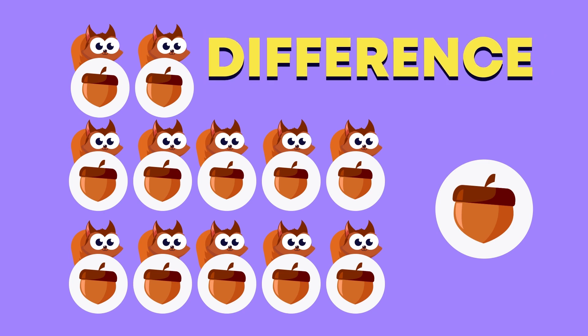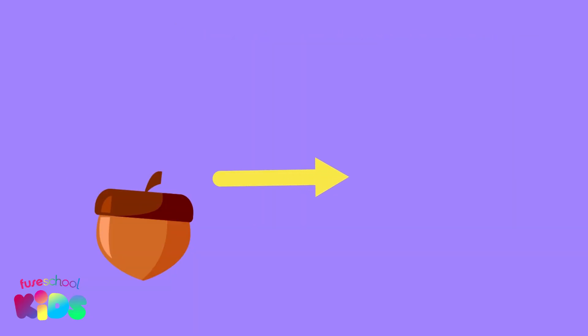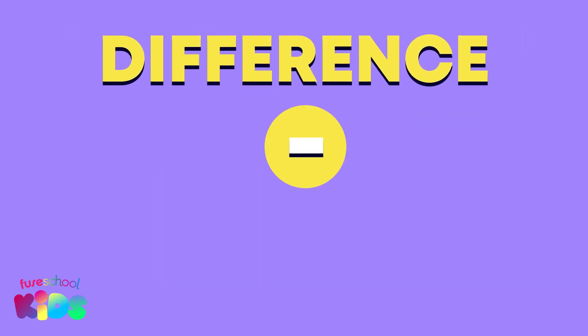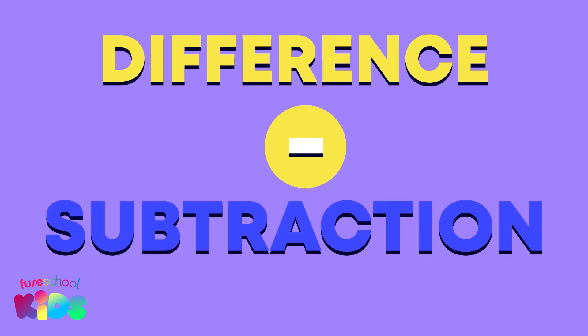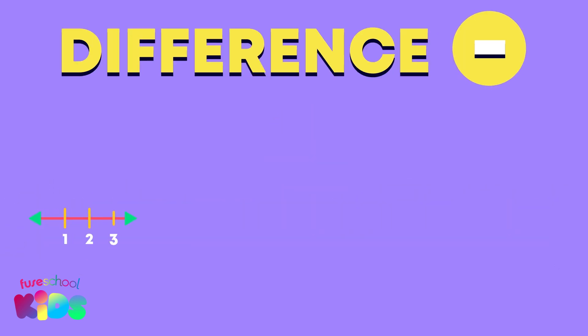This is a different sum because we want to find out how many more we need to get from 7 to 12. Remember, difference also means subtraction. To find the difference or how many more, we can count up from the smaller number using the number line. Count up from 7 with me.